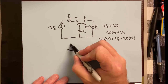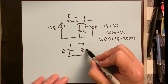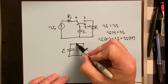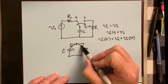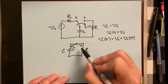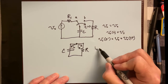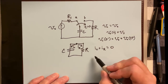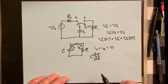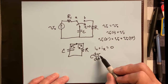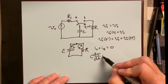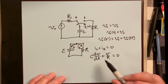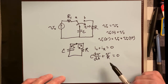At t equals zero, the switch is flipped and the circuit is effectively just the capacitor and resistor. Picking a node and applying the node voltage method, with I_C as the current through the capacitor and I_R through the resistor, KCL gives I_C + I_R = 0. That means C·(dV/dt) + V/R = 0 — a first-order ordinary differential equation.